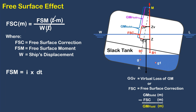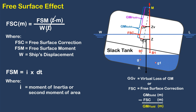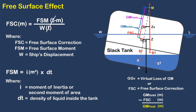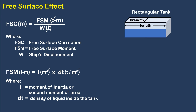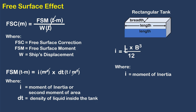This is the formula to determine the free surface moment: FSM equals I times dt, where small letter I is the moment of inertia, often termed as the second moment of area, and dt is the density of liquid inside the tank. The unit of moment of inertia is in meters raised to the power of 4, and the density is in tons per cubic meter — cancelling these units leaves a remaining unit of meter, making the unit of free surface moment ton meter. For a rectangular tank, the moment of inertia is equal to the length times the breadth cubed, divided by 12, where L is the length of the tank, B is the breadth of the tank, and 12 is a constant.